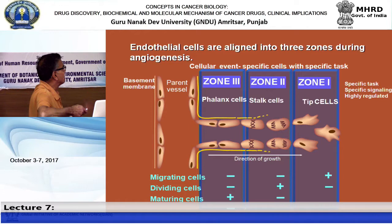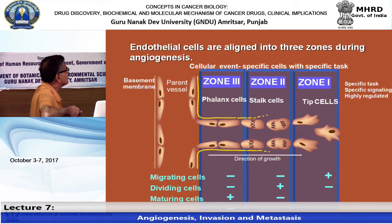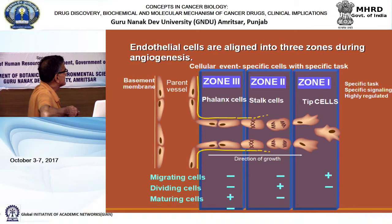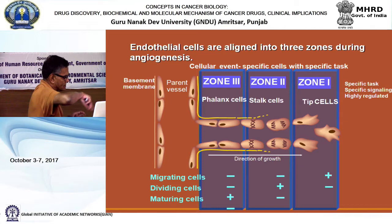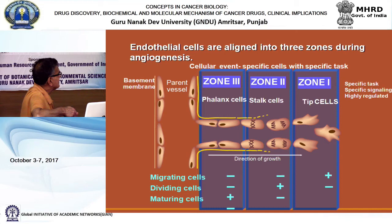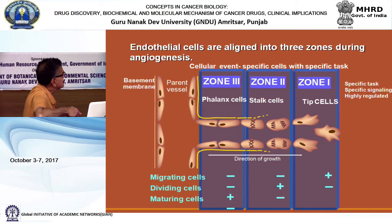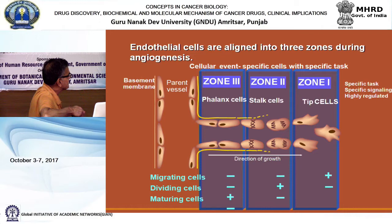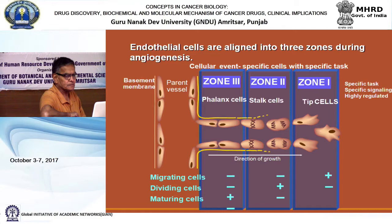Epithelial cells have three different zones: tip cells, stalk cells, and phalanx cells above the basement membrane. Migrating cells have tip cells regulated by a different set of regulatory proteins than stalk or phalanx cells. Tip cells are very important because they design what needs to happen to move forward.